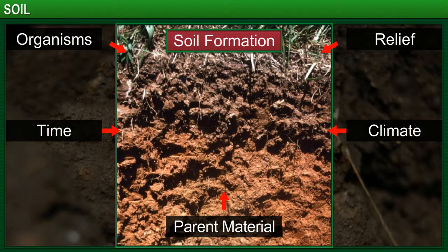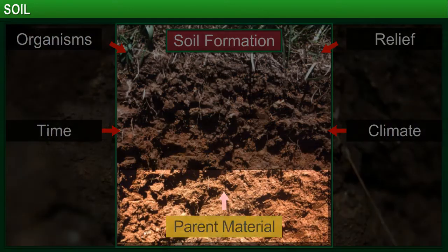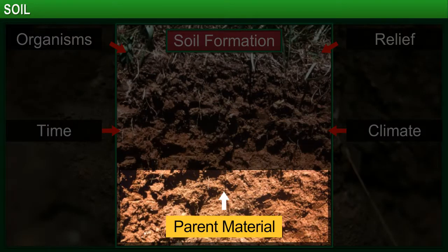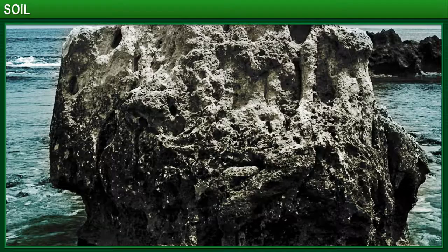There are a number of factors that affect the physical and chemical properties of soil in a landform. The primary factors are parent rock and climate in the area. The parent rock is the rock from which the soil is formed.